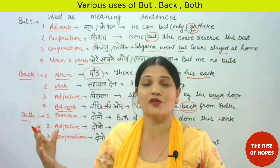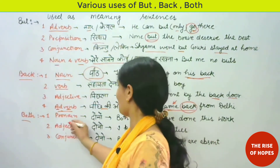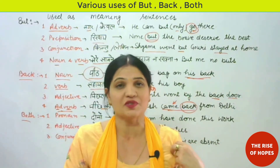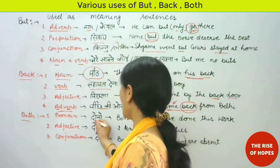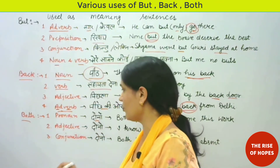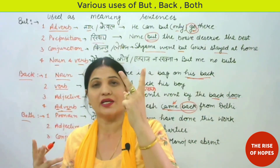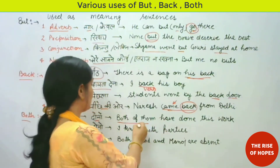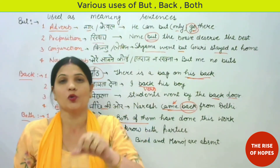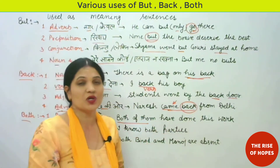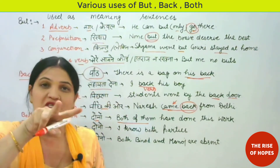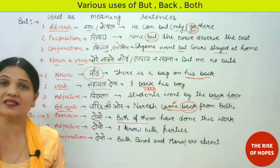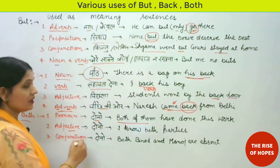The next word is 'both'. 'Both' can be used in different contexts as different parts of speech. First, we can use it as a pronoun, where it becomes the subject of the sentence. Example: 'Both of them have done this work.' Here 'both of them' is the subject — meaning those two, 'dono ne', have done this work.